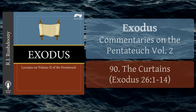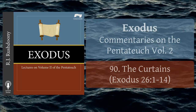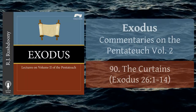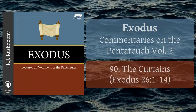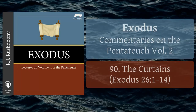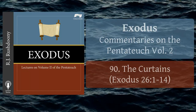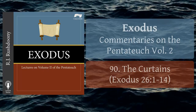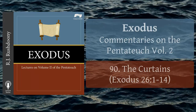The five curtains shall be coupled together one to another, and the other five curtains shall be coupled one to another. And thou shalt make loops of blue upon the edge of the one curtain from the selvage in the coupling, and likewise shalt thou make in the uttermost edge of another curtain in the coupling of the second. Fifty loops shalt thou make in the one curtain, and fifty loops in the edge of the curtain that is in the coupling of the second, that the loops may take hold one of another.